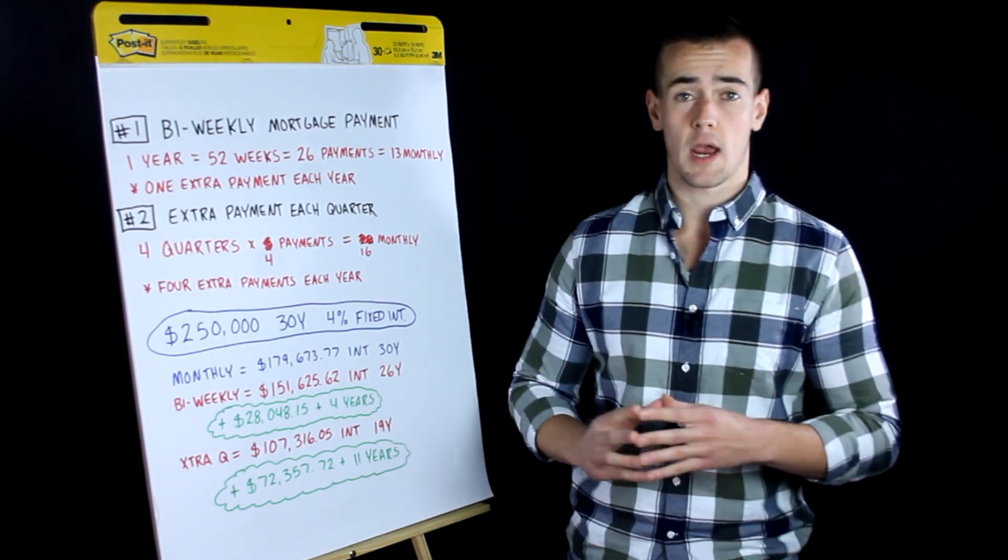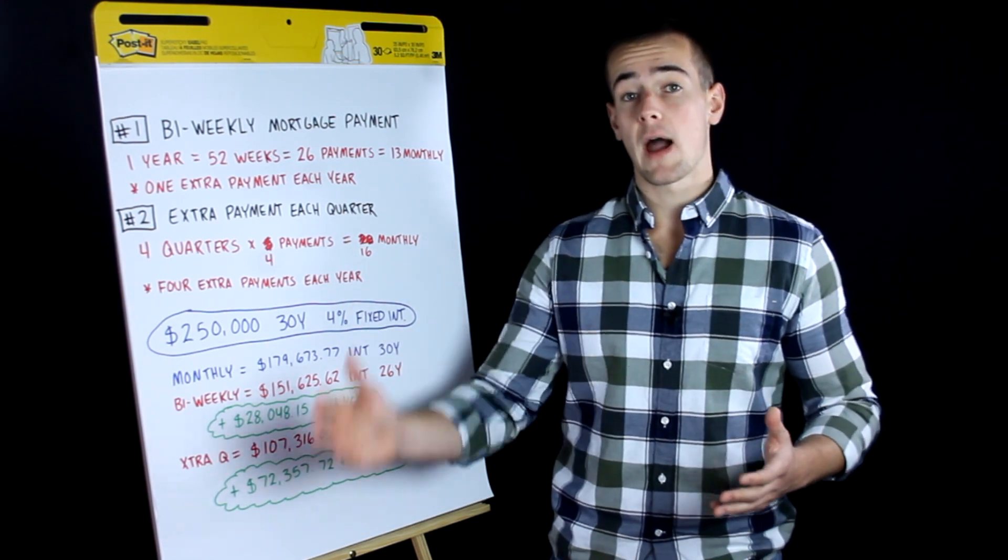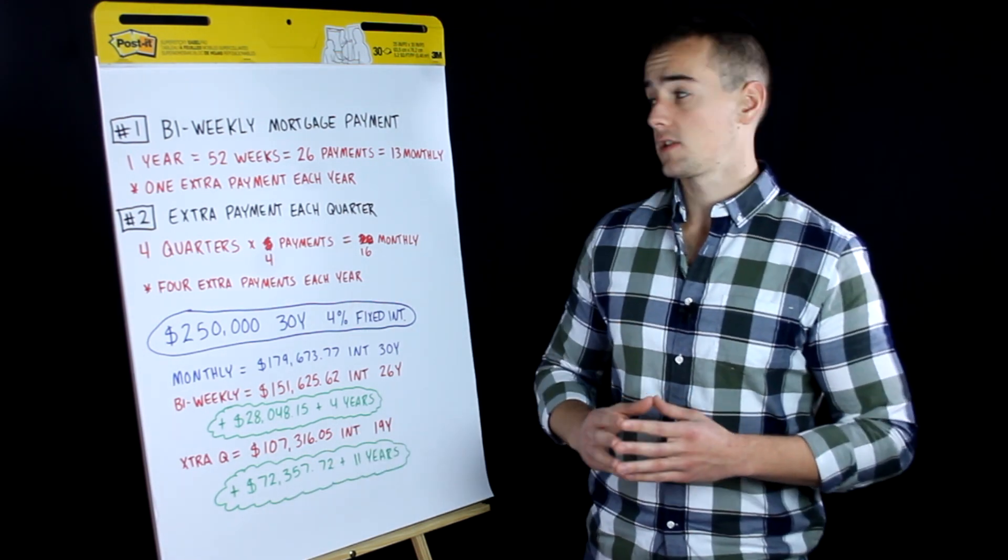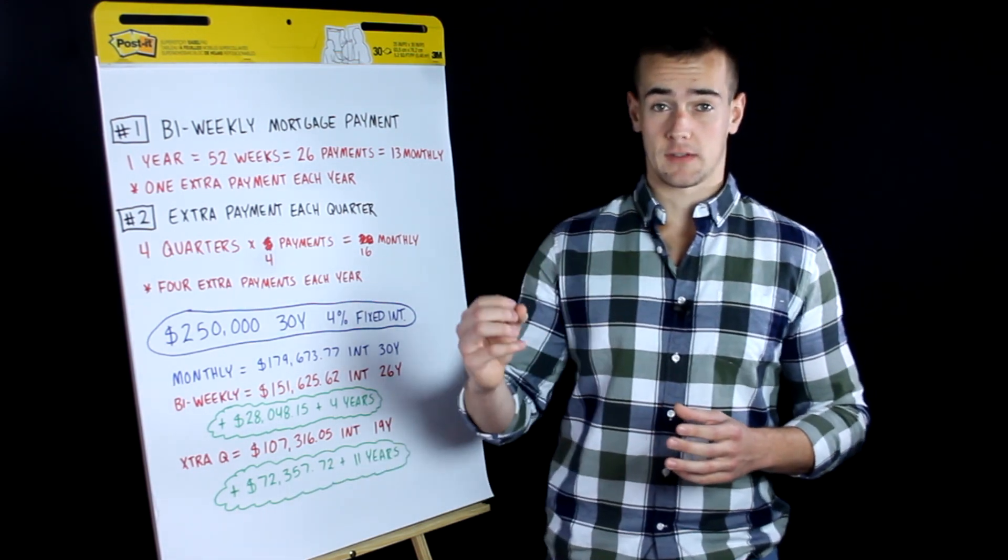So if you make bi-weekly payments, you're actually making twenty-six bi-weekly payments, which is equivalent to thirteen monthly payments.